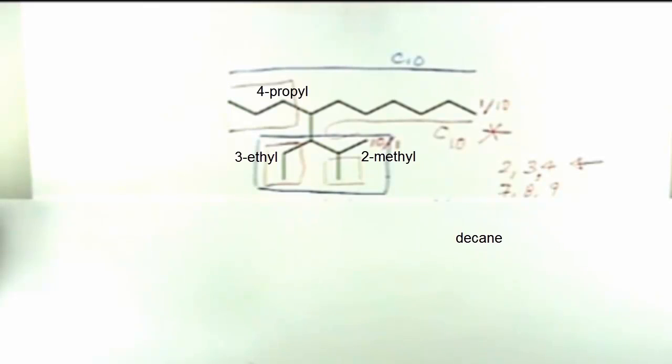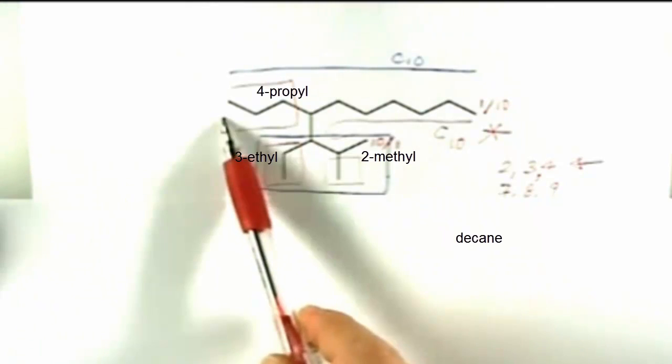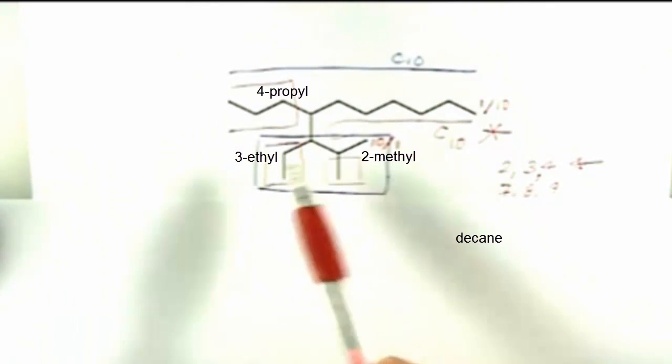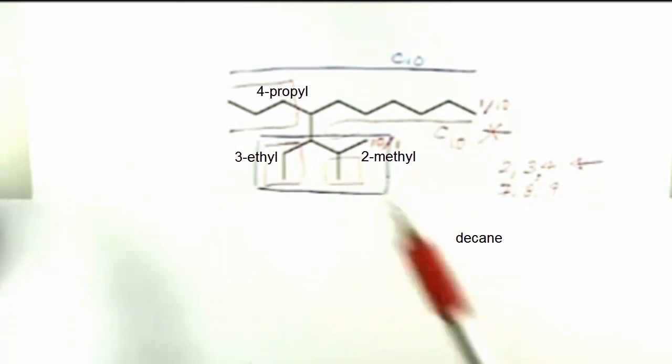And then in front of that, we're going to put the branches and substituents off the chain. We're going to list those in what order? Alphabetical order. Right. So we're going to put them alphabetically and then we put whatever number matches with that substituent out in front. So we have a methyl group, an ethyl group, and a propyl group. So it's going to be ethyl, methyl, propyl in terms of the listing.